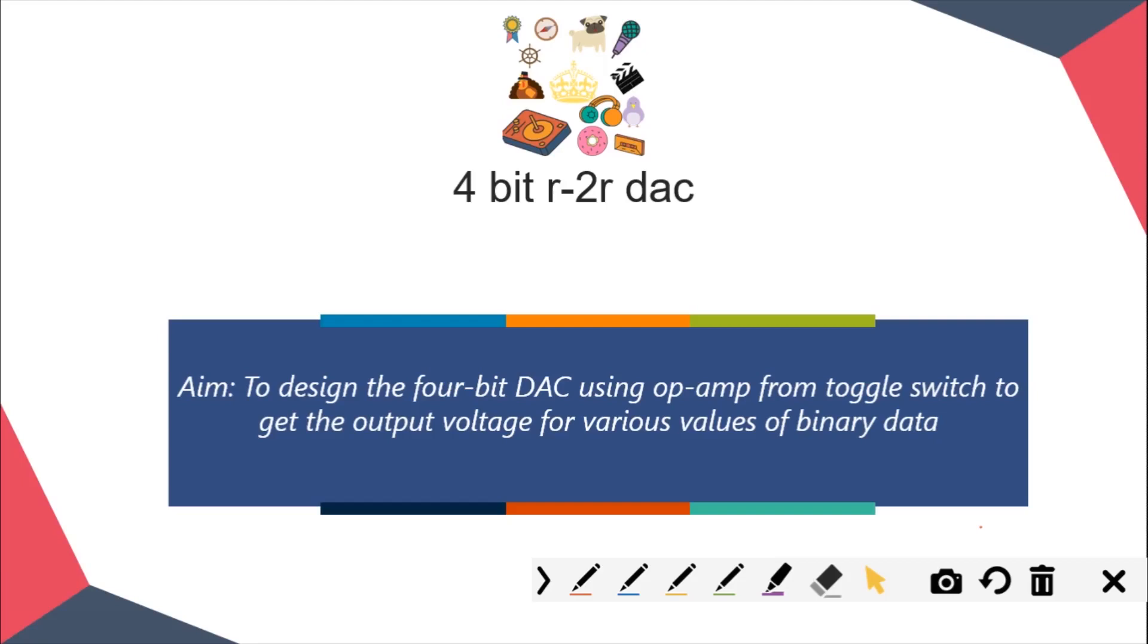First, we will see how a toggle switch gives input of 5 volts and gets the output in analog form. Basically, DAC stands for digital to analog converter, which takes data in digital form and by using suitable circuitry, provides an analog output.